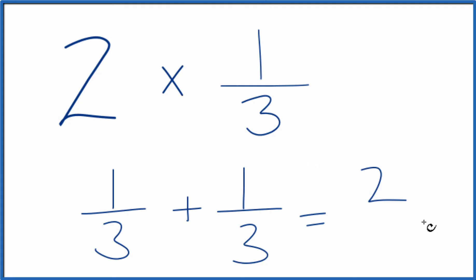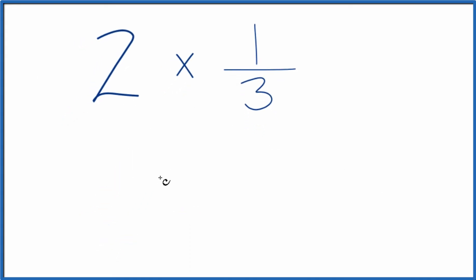Another way to do this is to think about two, this two up here, as two over one. It's still two. We're just dividing by one, but this gives us the start of a fraction.